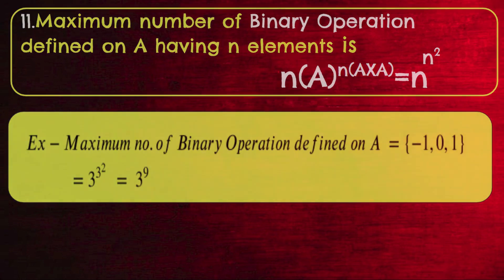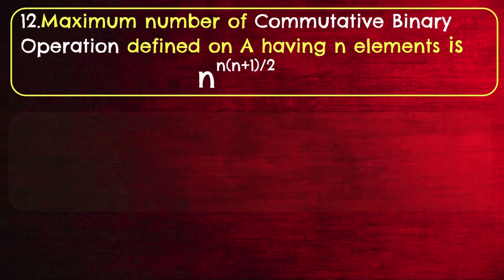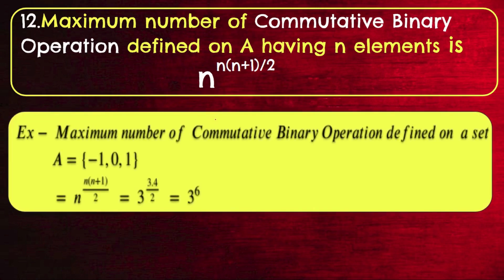The last result: the maximum number of commutative binary operations defined on a set A having N elements is N raised to N(N+1)/2. Example: the maximum number of commutative binary operations on a set having 3 elements is 3^(3·4/2) = 3^6. Remember the result: N raised to N(N+1)/2. For the proof, please contact via WhatsApp.